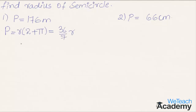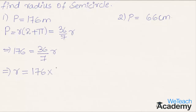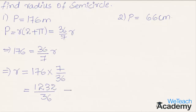Substituting the given value of perimeter in the formula, we get 176 = 36/7 into r. Transferring 36/7 to the left-hand side, we get r = 176 into the reciprocal of 36/7, that is 7/36. Multiplying 176 and 7 gives 1232 divided by 36, and dividing gives the result approximately 34.22 meters as the radius.